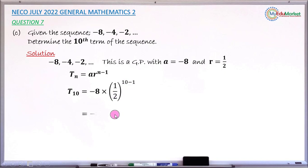10 - 1 gives 9. Taking the power of 9 inside the bracket: 1^9 = 1 and 2^9 = 512.